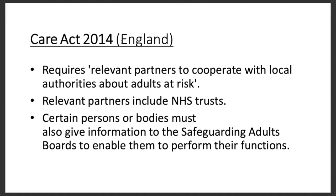The Care Act 2014 governs England and requires relevant partners to cooperate with local authorities about adults at risk — including adults with disabilities or anyone facing domestic abuse or other forms of abuse. Relevant partners include NHS Trusts. Certain persons or bodies must also give information to the Safeguarding Adults Board to enable them to perform their functions. So if a nurse is worried about a patient, such as in the case of domestic abuse, they can share that information with the Safeguarding Adults Board, who will then try to provide assistance to the patient.